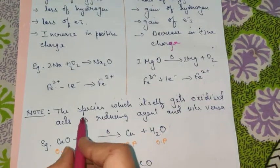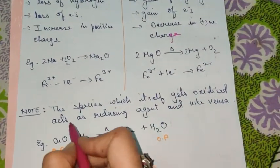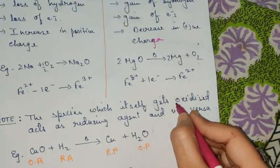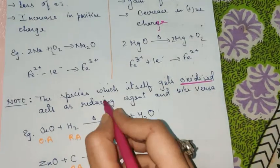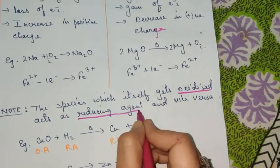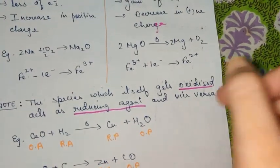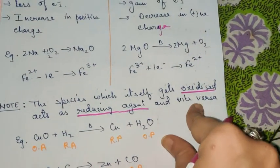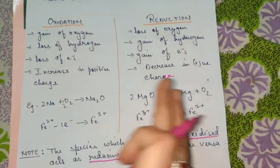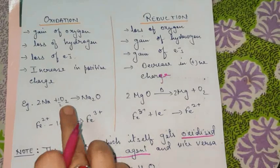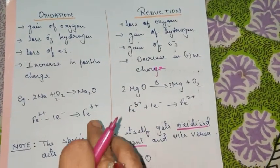Here is an important note: the species which itself gets oxidized acts as a reducing agent. And vice versa — the species whose own reduction is occurring will behave as an oxidizing agent. This is a very important point. If there is any doubt, you can message me and ask.